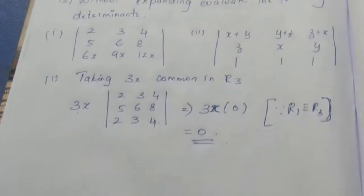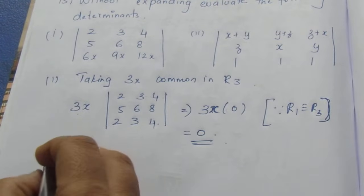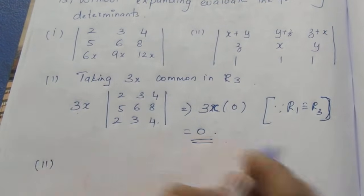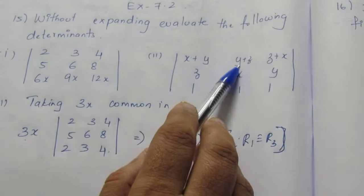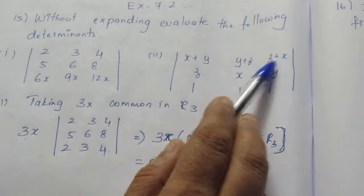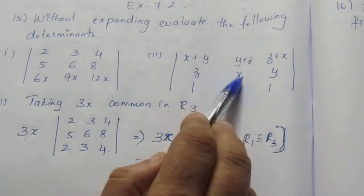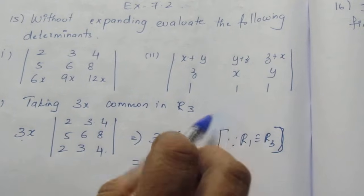Now let's see the next question. The second determinant involves: x+y, y+z, z+x in the first row; z, x, y in the second row; and z, y, 1, 1, 1 in the third row. Let's reduce it.